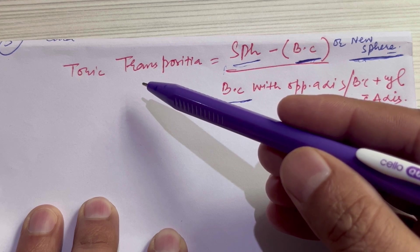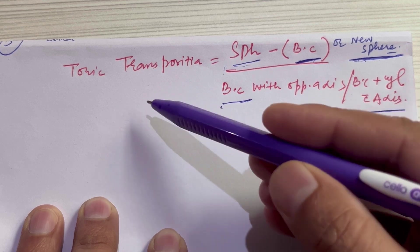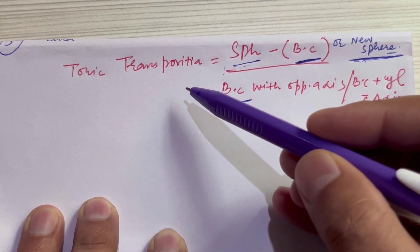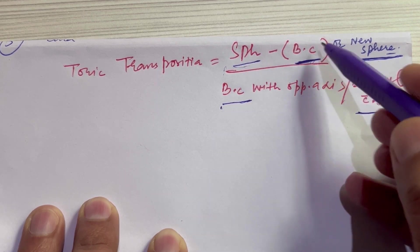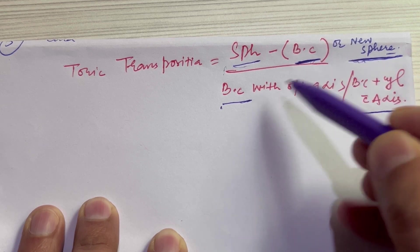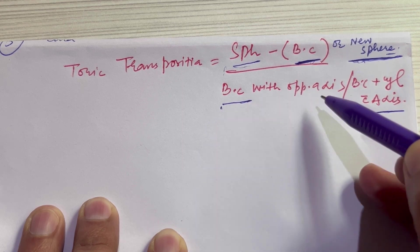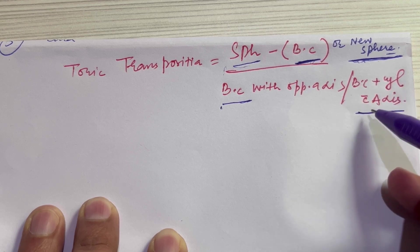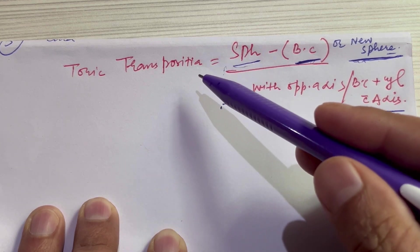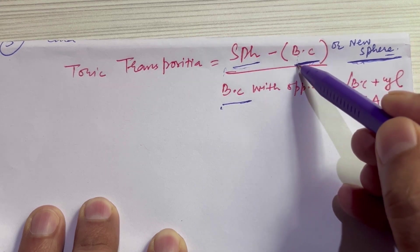There are various rules to calculate the final toric transposition result, as we saw in simple transposition. The final toric transposition result is: sphere minus base curve — also called new sphere — in the numerator, and in the denominator, base curve with opposite axis, and base curve. To know the final toric transposition result, it is mandatory to know what is base curve.